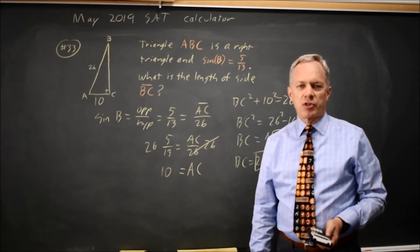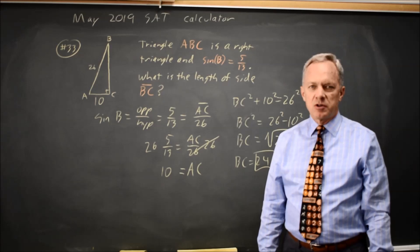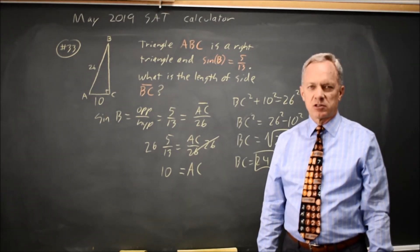This is a 5, 12, 13 right triangle multiplied through by 2, but you don't have to know that since we have a graphing calculator or a scientific calculator.